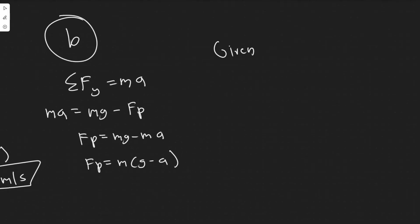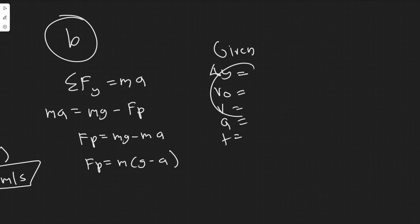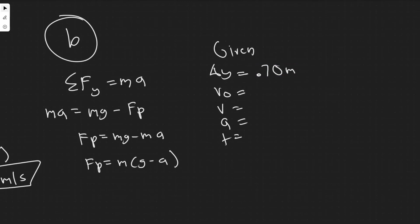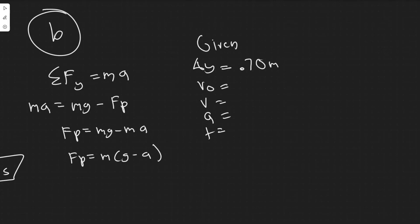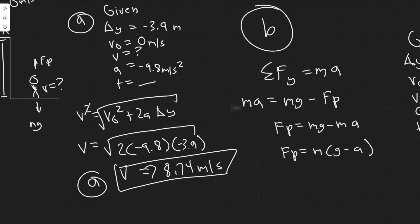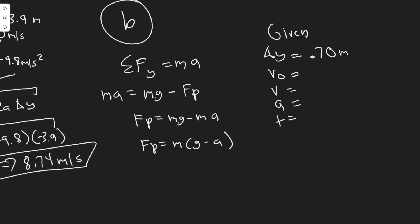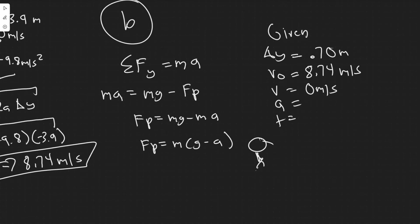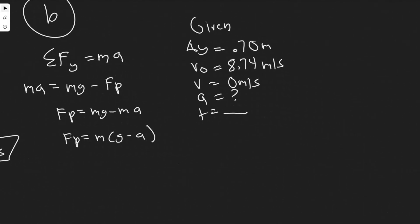Setting up kinematics for Part B: the variables are delta y, v sub zero, v, a, and t. The interval is the 0.7-meter deceleration phase, so delta y is positive 0.7 meters — since downwards is positive. The initial velocity is 8.74 meters per second, which is the velocity we found at the end of the last interval right when he lands. The final velocity is 0 meters per second because he eventually stops. Time we don't know, and we're solving for acceleration a.